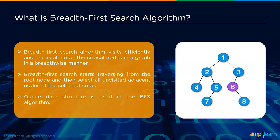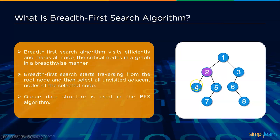Here is a GIF explaining BFS algorithm. We select root node 1, then it traverses to node 2, then to node 3. Since node 1 has no other adjacent nodes, control moves to node 2. From 2, it traverses to nodes 4 and 5. It goes to 4 first — since 4 has nothing to traverse, it backtracks to 2 and then goes to 5.